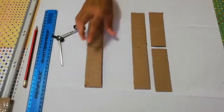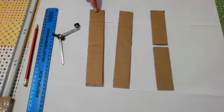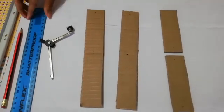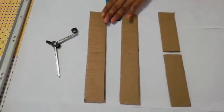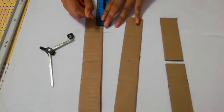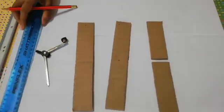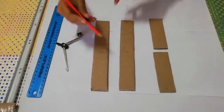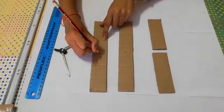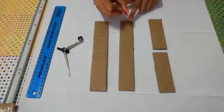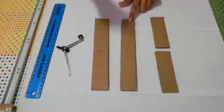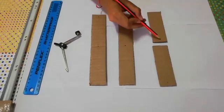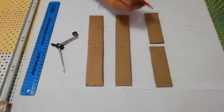Now taking your two longest pieces of cardboard, you are going to make a hole on one side of the cardboard one centimeter away from the edge. You will then make a hole in the center of the cardboard, and you're going to do this for both your long pieces. For your two smaller pieces, you will be making a hole on either side of the cardboard, both one centimeter away from the edge.